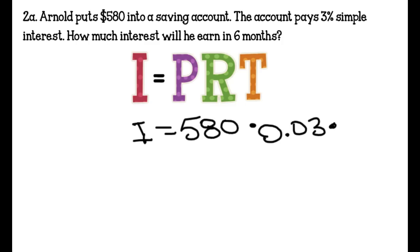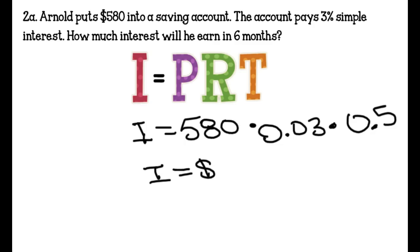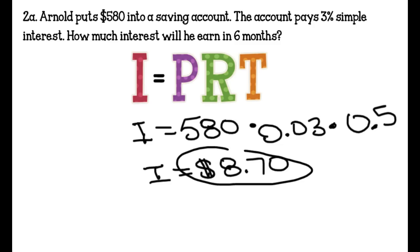Our time has changed. Most people will be tempted to write 6 months there, but time on interest is always in a matter of years. If we put a 6, it will calculate as if it is 6 years. So we have to think of how long 6 months is in relation to a full year — that is half a year, 0.5. Our interest in 6 months is going to be $8.70. We circle it and that's our answer.